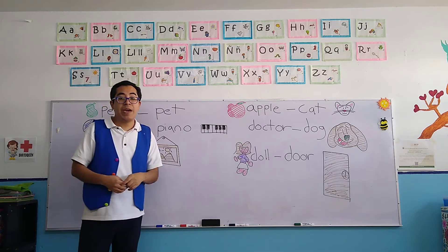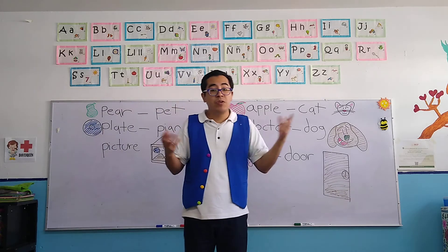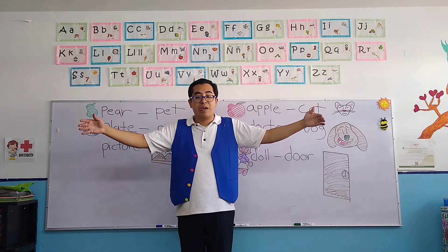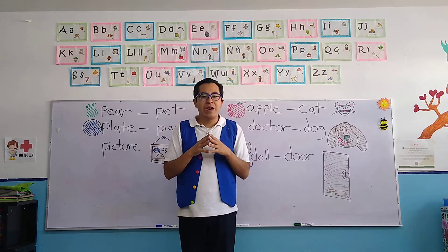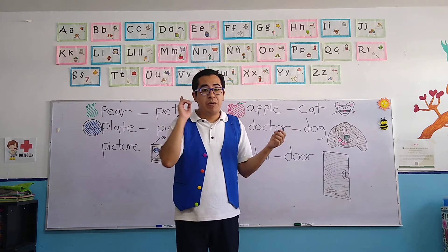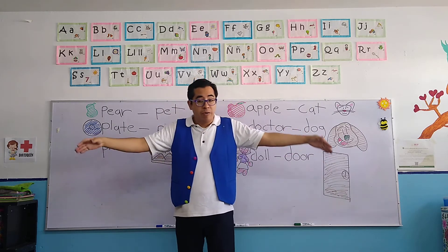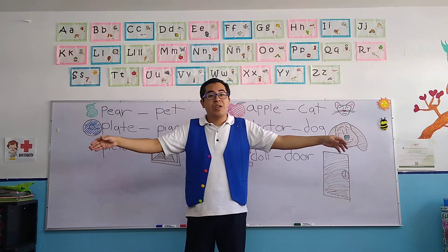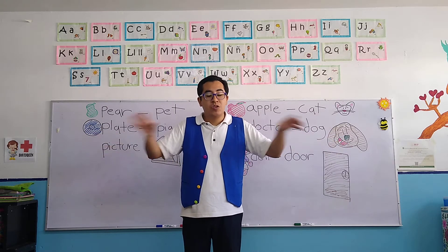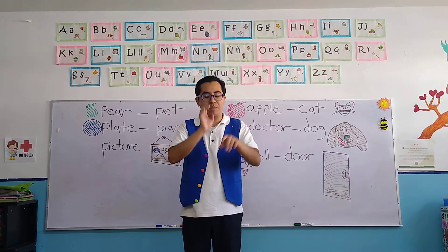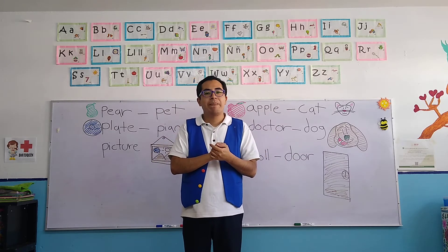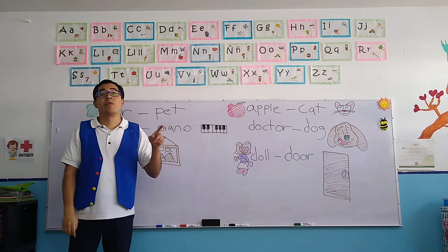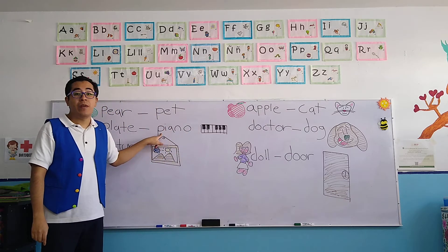Let's continue with the piano. Piano is a musical instrument that is big. Well, pianos have different sizes, but the most common ones are very big. Piano is a musical instrument so you can play beautiful music. Piano is also a word that begins with the letter P.